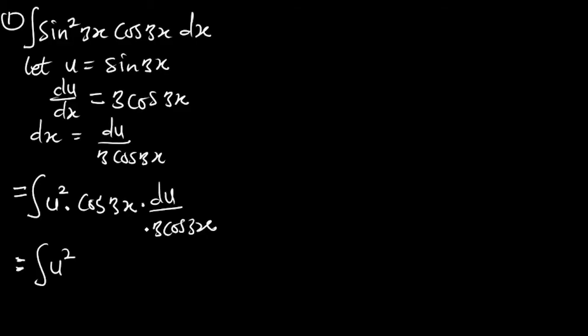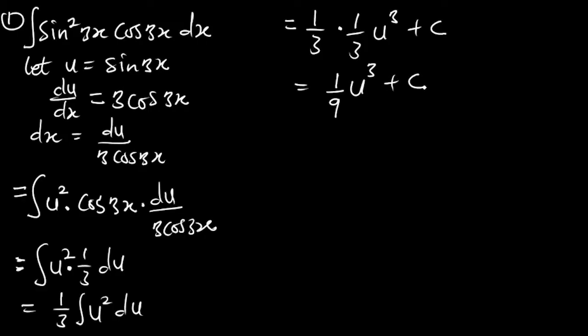And I'll be left with integral u squared. Remember there is 1 over 3 here. This will take care of multiplying 1 over 3 du. So finally, I can bring it out as 1 over 3 integral of u squared du. And I can integrate this. That will be equal to 1 third multiplying another 1 third u cubed plus c. So I'm getting 1 over 9 u cubed plus c.